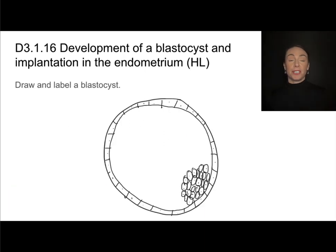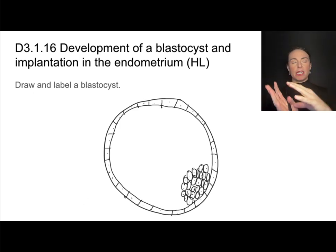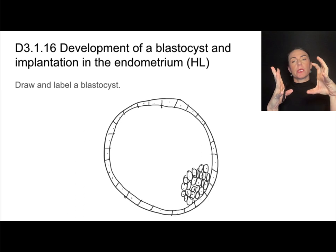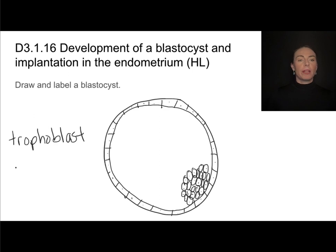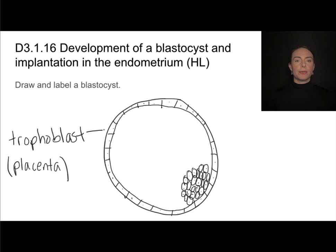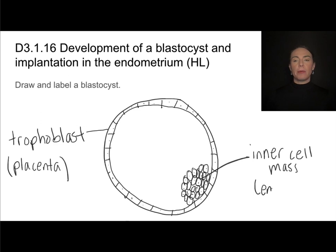This is a rough drawing of a blastocyst — what we have after about seven days when the zygote has undergone mitosis and migrated into the uterus. There are two distinct features: a ring of cells on the outside called the trophoblast, which will eventually give rise to the placenta, and on the inside a ball of cells called the inner cell mass, which will develop into the embryo or fetus.